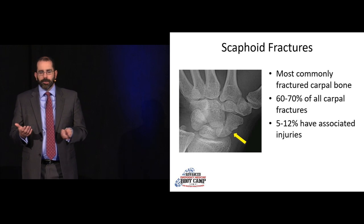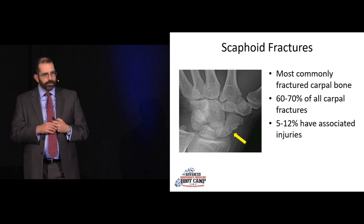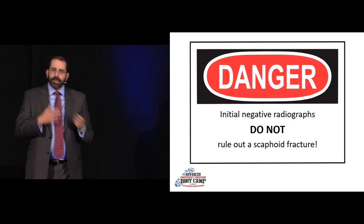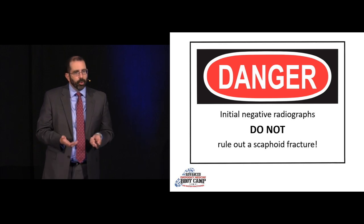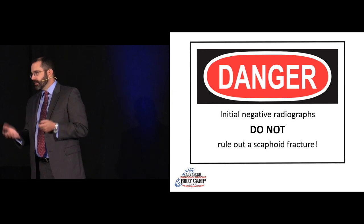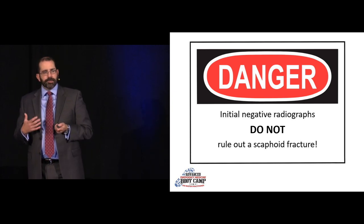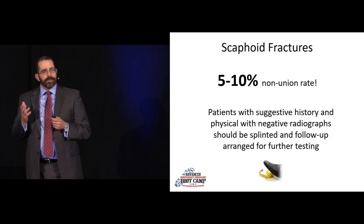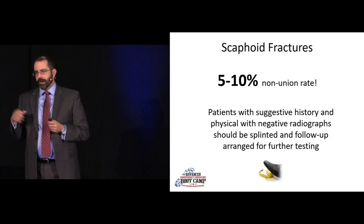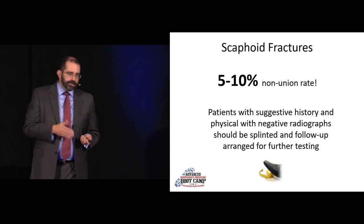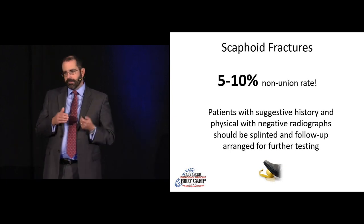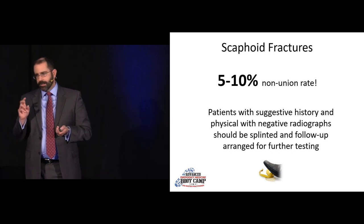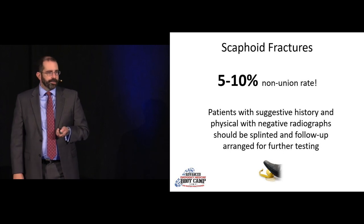Scaphoid fractures are very common — roughly two-thirds of all carpal fractures. Up to 10% have associated injuries. These are bad injuries to miss. Plain films may be initially negative, so physical exam is critical. If there's a FOOSH mechanism with tenderness in the anatomical snuff box or with axial loading, the convention is to treat as a scaphoid fracture with immobilization and get repeat imaging in 12 to 14 days. Missing it can lead to non-union and avascular necrosis, as the blood supply to the proximal scaphoid is very tenuous.